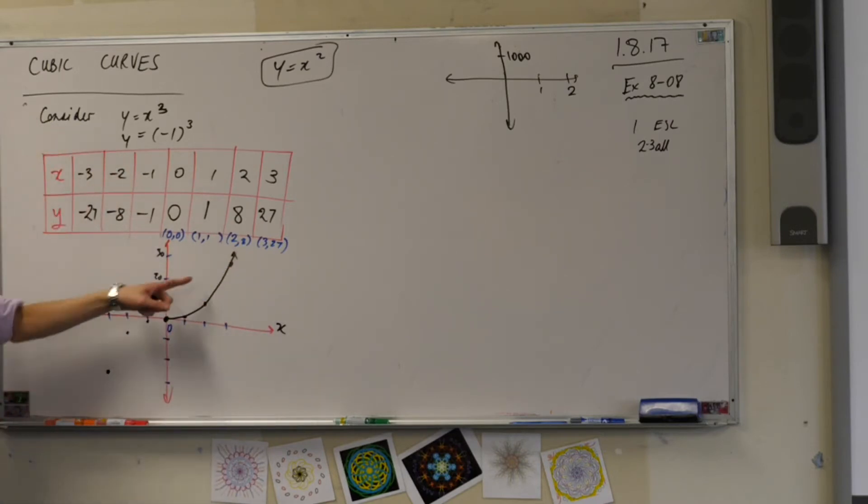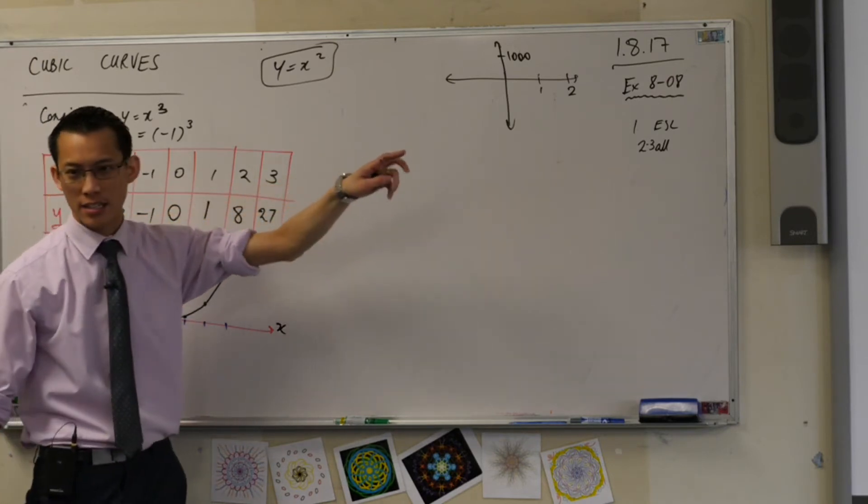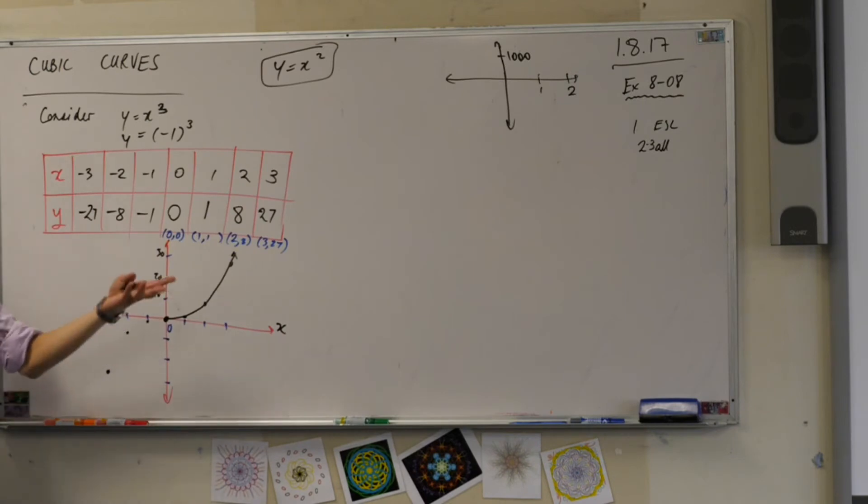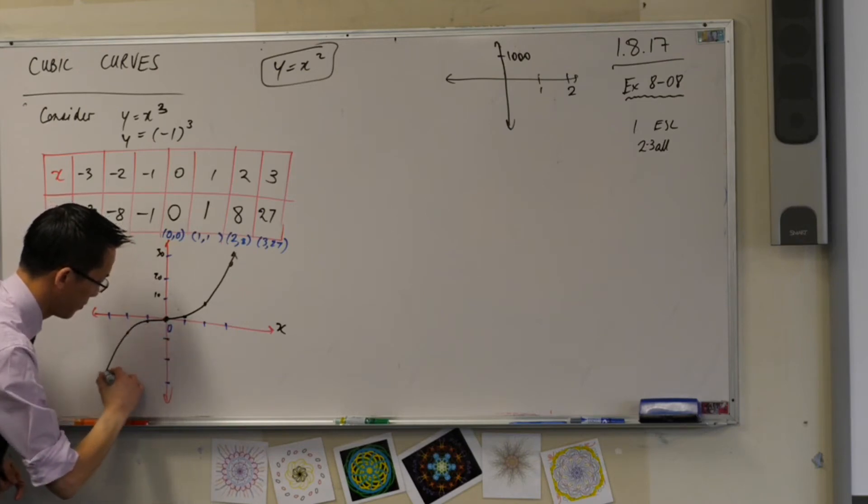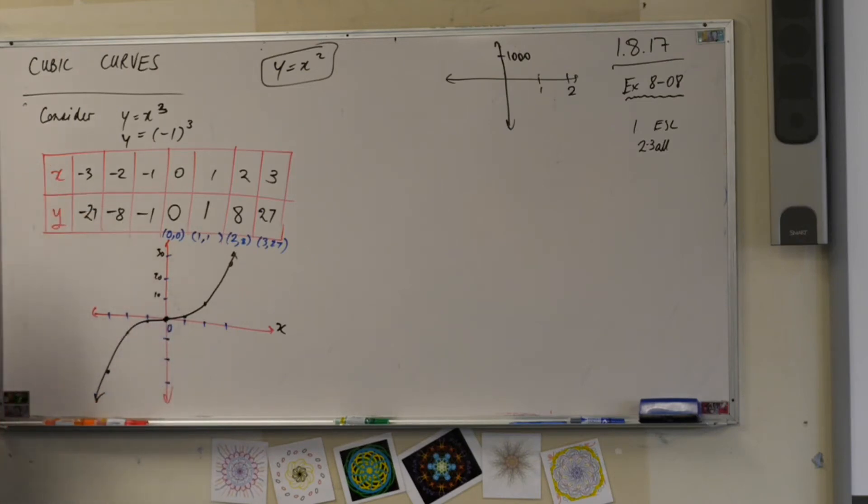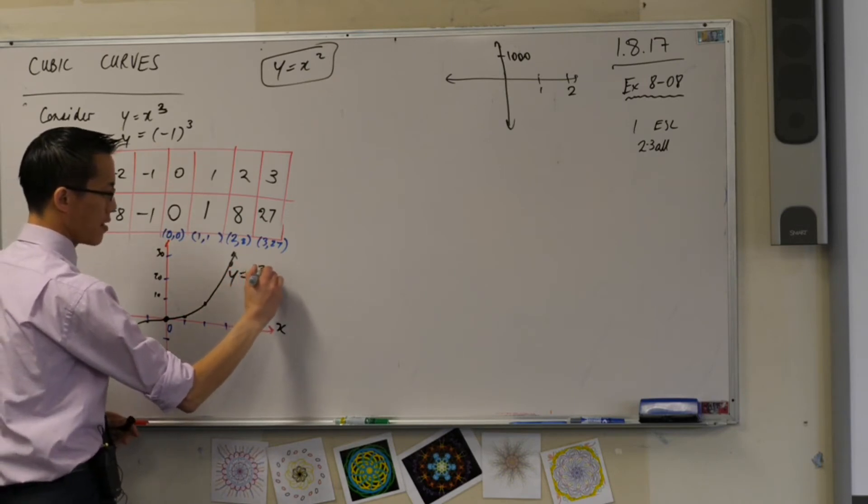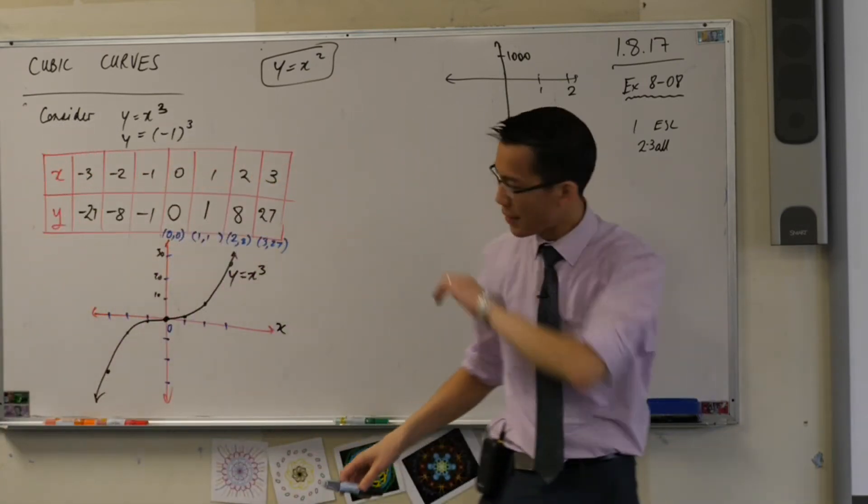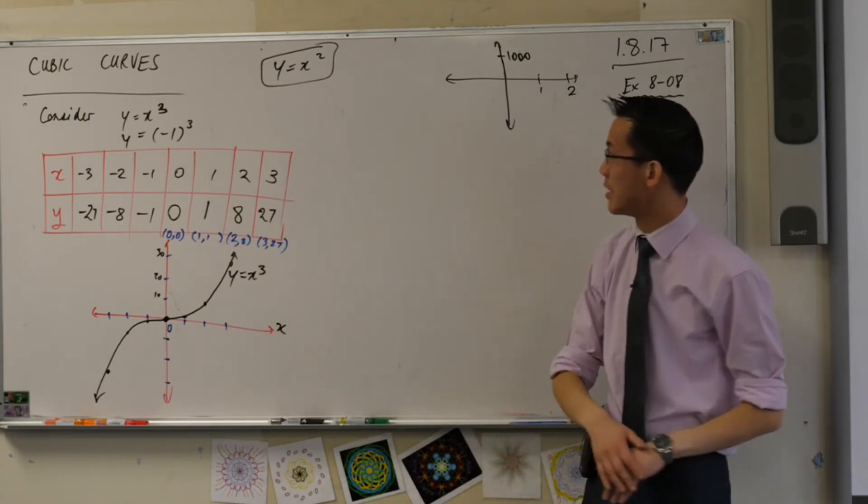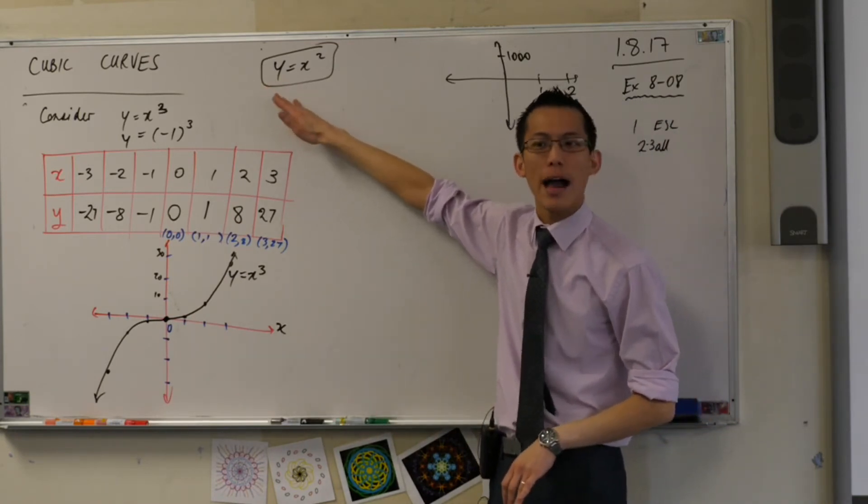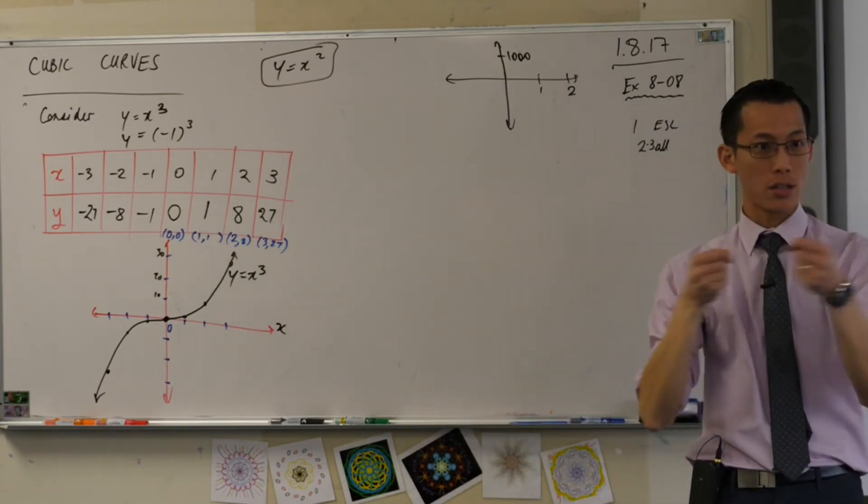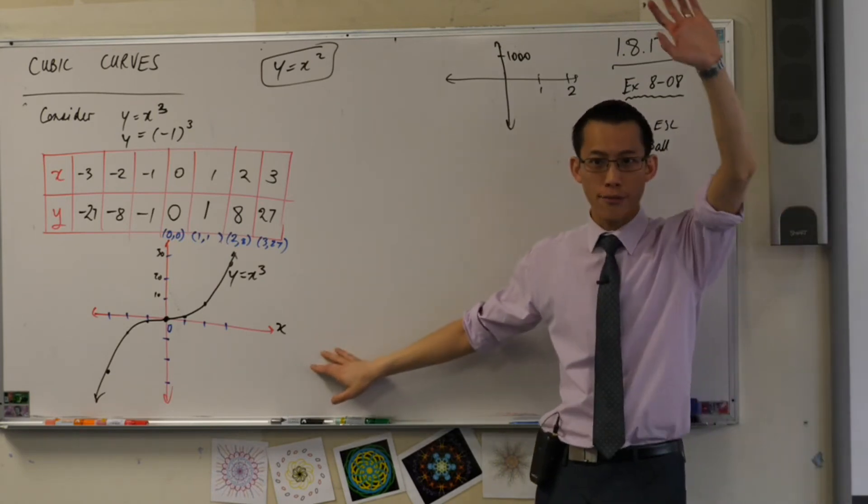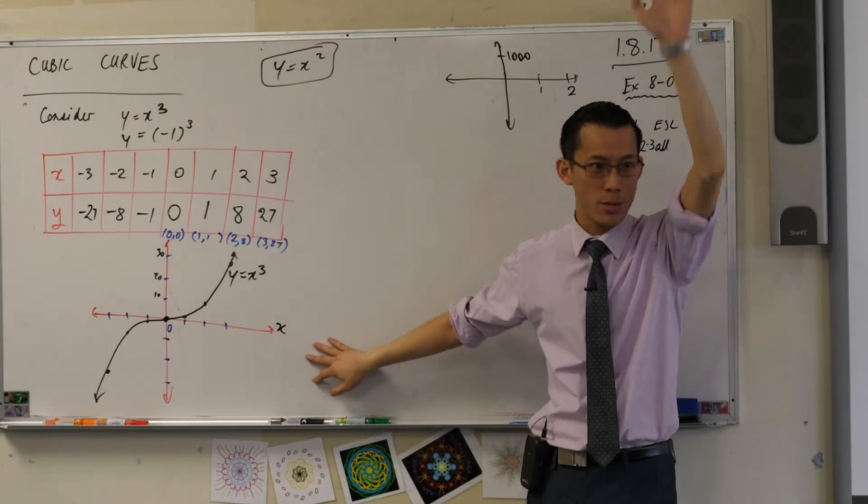I'm going to join these up now. By the way, you may not have done this - I'm going to draw an arrow because it's not like the graph stops at three. It's going to keep on going to four, five, six, a million, whatever. So that arrow just indicates I keep going. On the left-hand side the same. This, and I'd love it if you could label with me, is y equals x cubed.